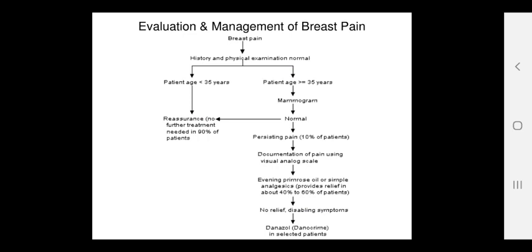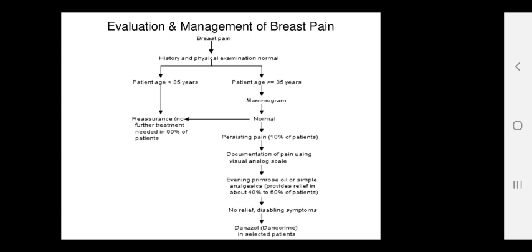Evaluation and management of breast pain: First take history and do physical examination. If normal and the patient is less than 35 years, reassure — no further treatment needed in 90%. If she is 35 years or older, mammogram is advised. If normal but persisting pain in 10% of patients, document pain using visual analog scale. Evening primrose oil or simple analgesics provide relief in 40 to 60% of patients. No relief or disabling symptoms — consider danazol in selected patients.